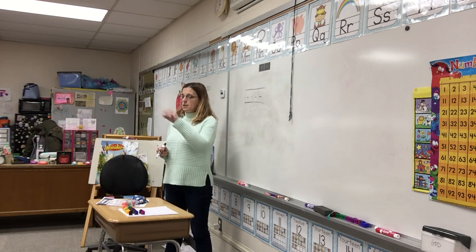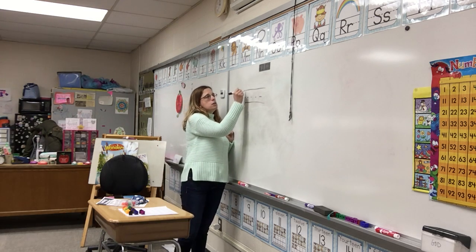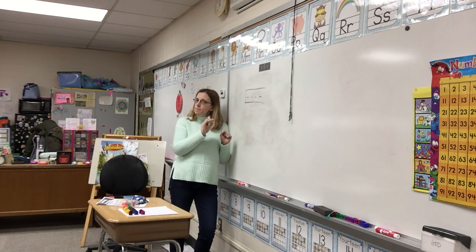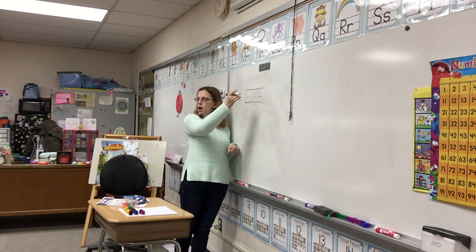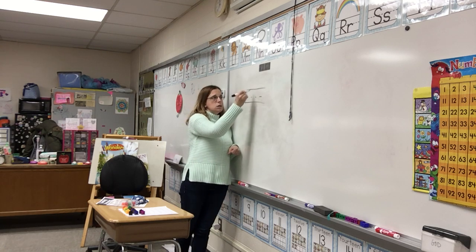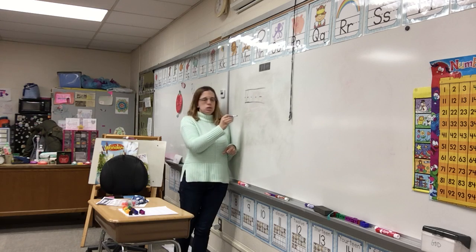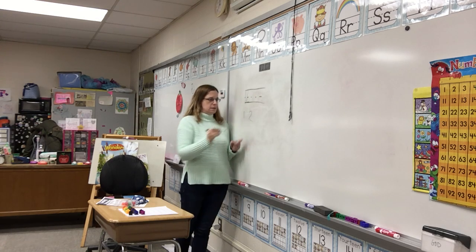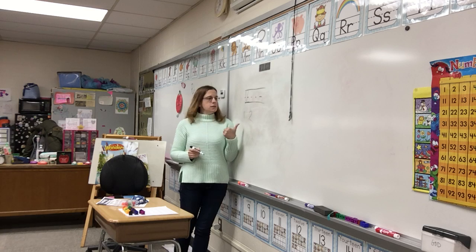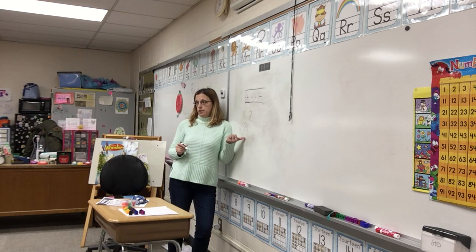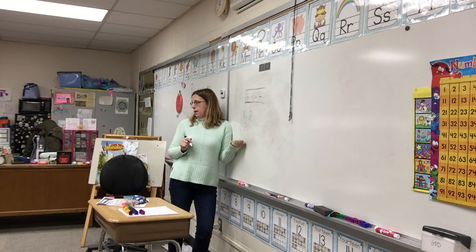So when you go to write a twelve, how many numbers make up the number twelve, Kennedy? One and a two. How many is that? Two. One and a two, yes. So when you write your twelve, you're going to start with your one and then — not on top of the one, but not so far apart that it looks like a one and a two — you're going to make your two. That's how you make your two. You don't make it like this. Is that a twelve? No. That's a one and a two. You also don't make your twelve like that — that's twenty-one. Jacoby just said it.